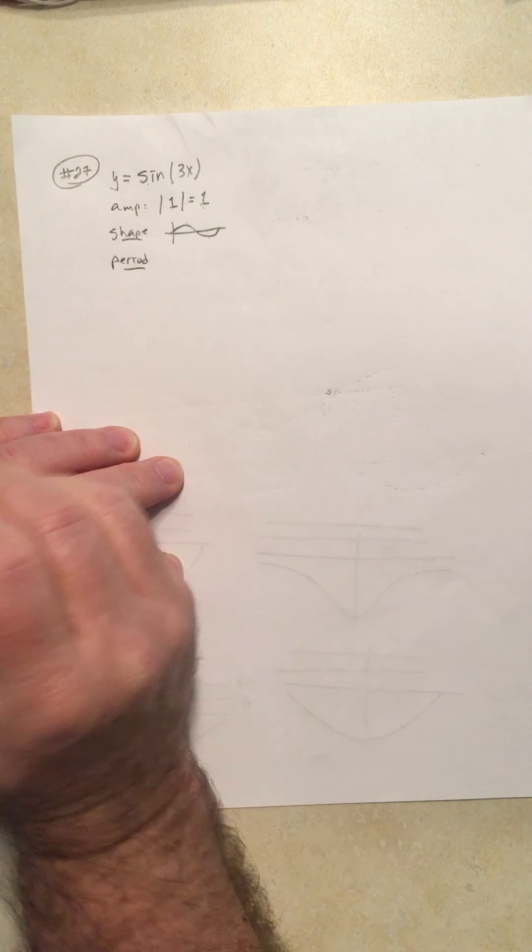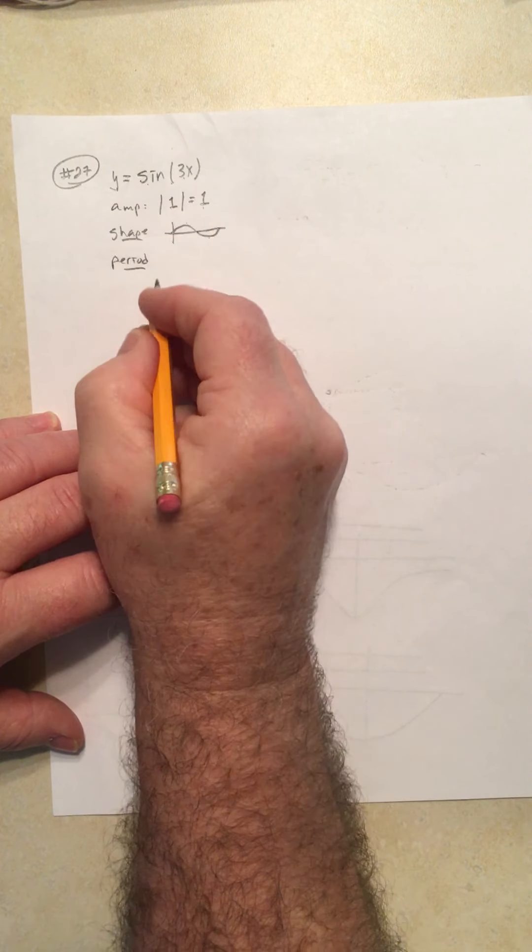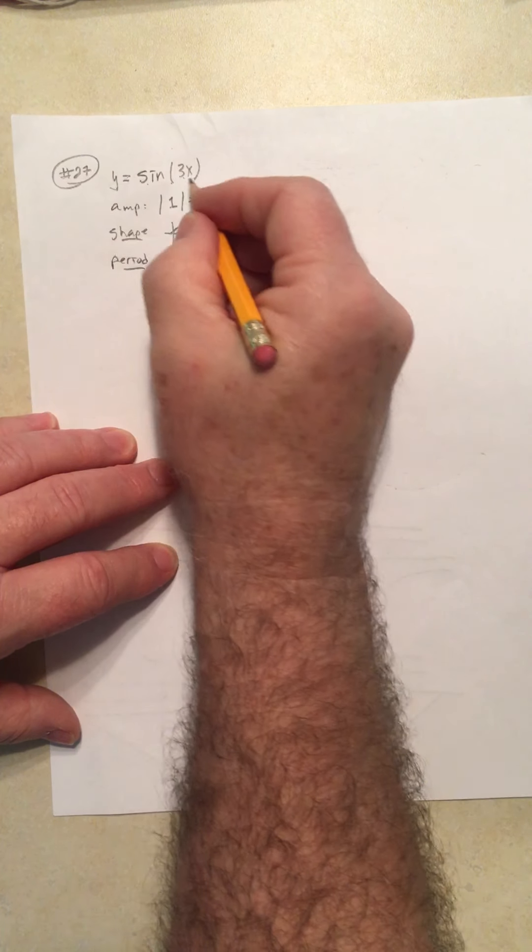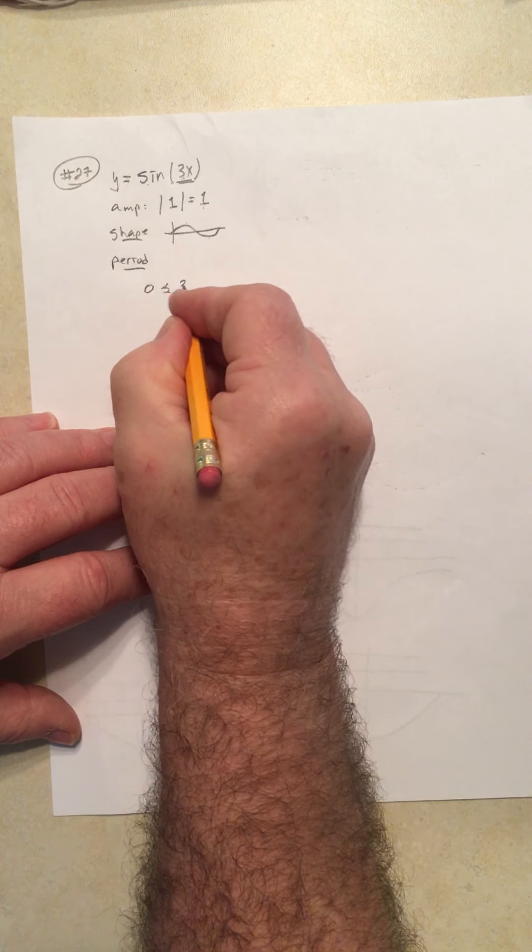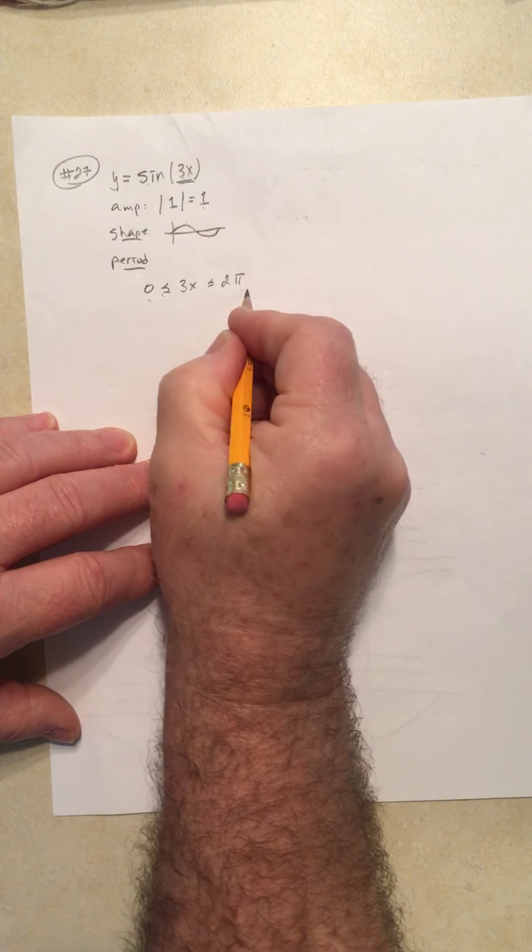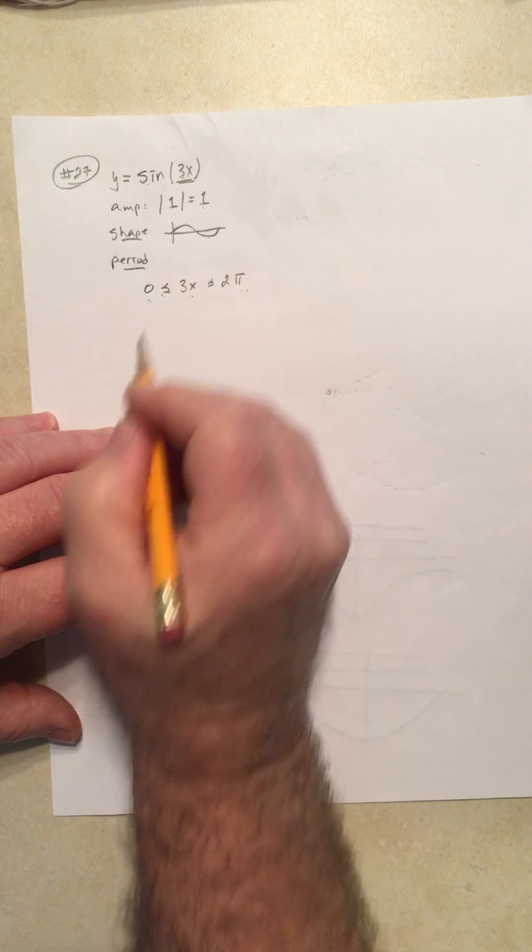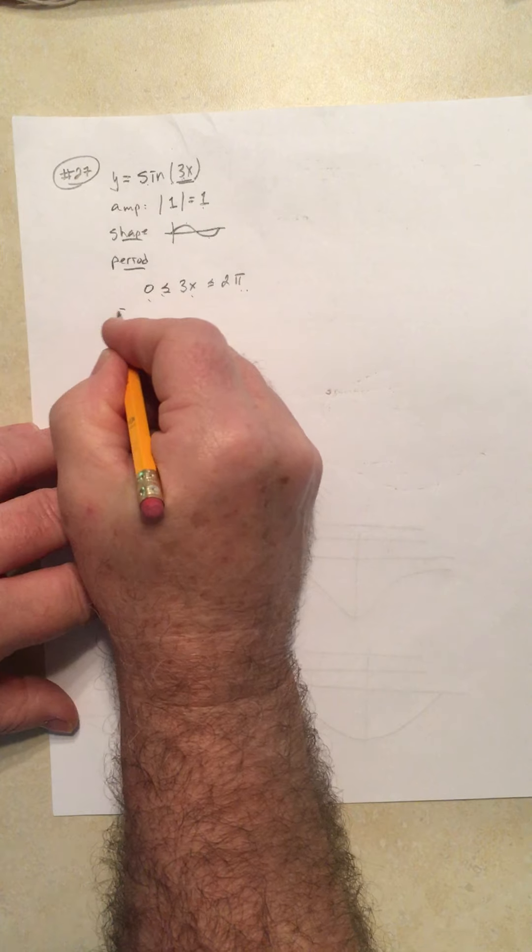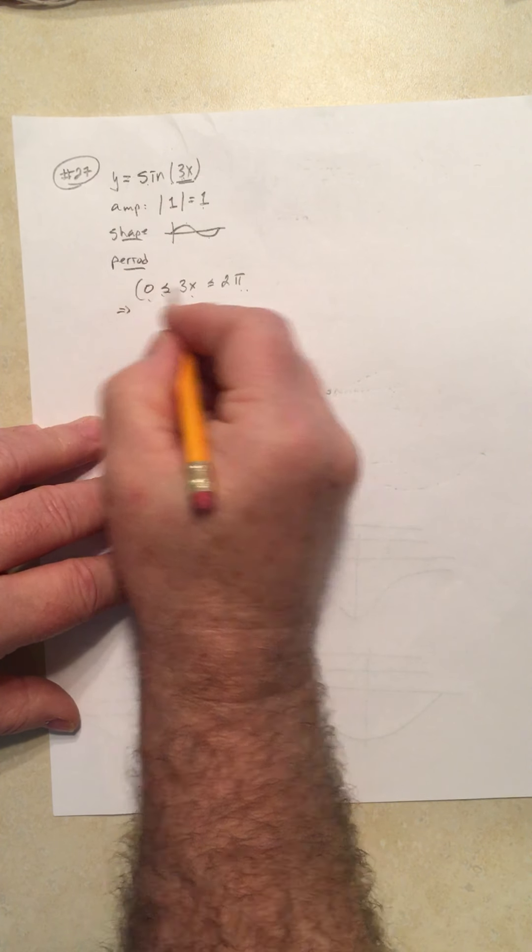Alright, so the period is again 0 less than or equal to - take the argument in the middle - 0 to 2π. Put the argument in the middle, solve for x. So let's see what needs to happen.